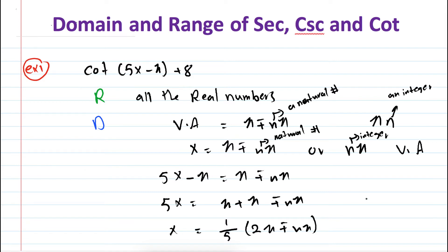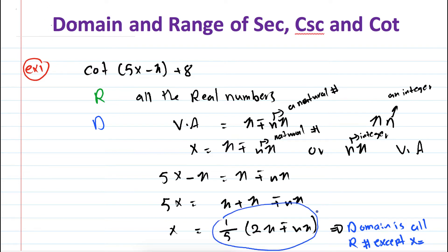At these x values I have a vertical asymptote. Therefore the domain is all the real numbers except x equal to (1/5)(2π ± nπ), such that n is a natural number. Do you see how easy it is to find the domain and range — just follow these steps.